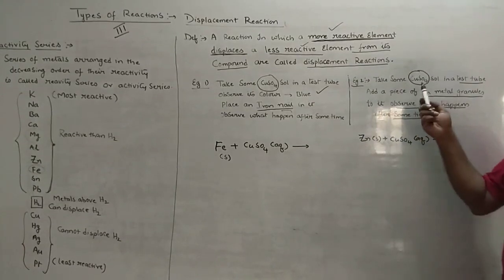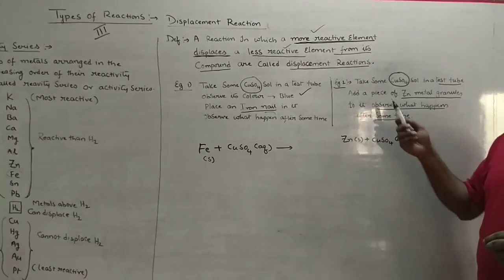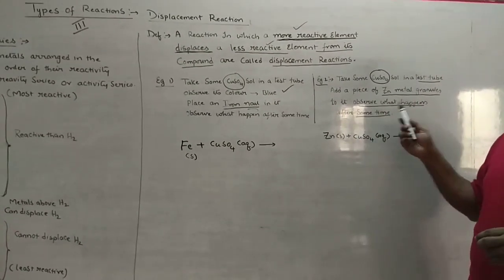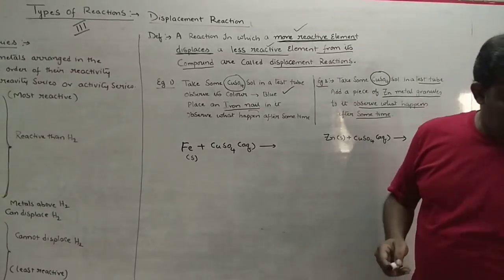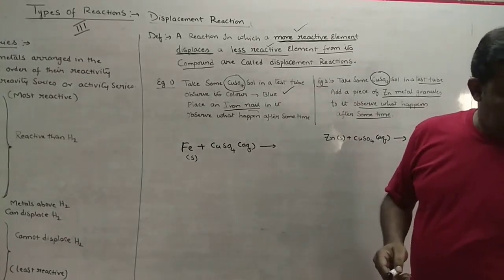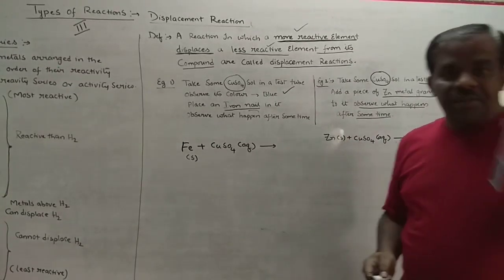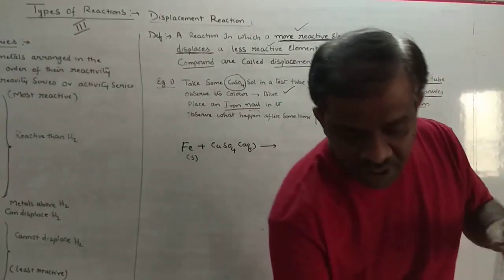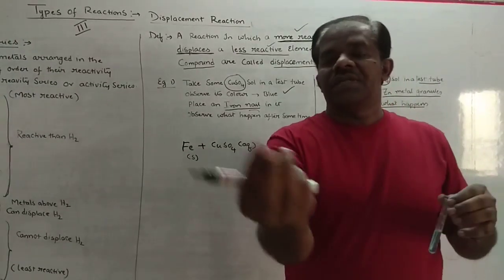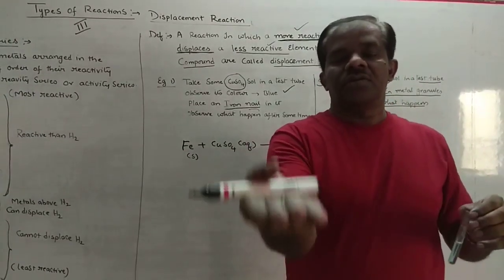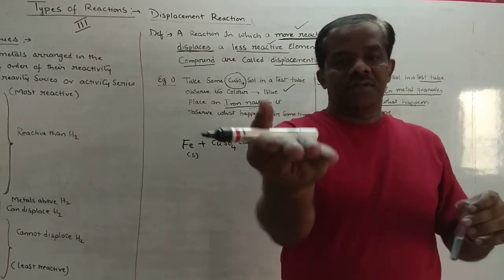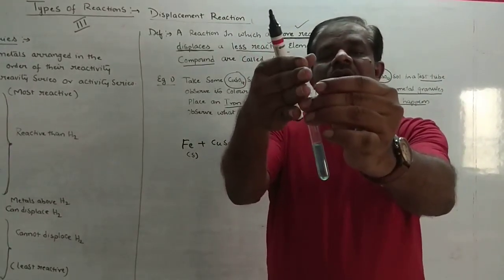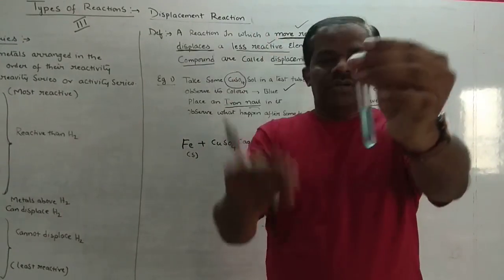In Example 2, we again take some copper sulfate solution in a test tube and add a piece of zinc metal granules to it. Here, some amount of copper sulfate solution is taken, to which we add zinc granules. These zinc metal granules have been added to the copper sulfate solution, and we will observe what happens after some time.